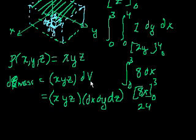And then we, as we saw it on the last video, if you're using rectangular coordinates, this volume differential could just be the x distance times the y distance times the z distance.